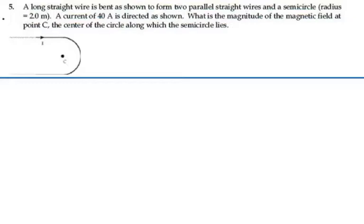Here's problem 35. A long straight wire is bent as shown to form two parallel straight wires and a semicircle of radius 2 meters. A current of 40 amps is directed as shown. What is the magnitude of the magnetic field at point C, the center of the circle along which the semicircle lies?